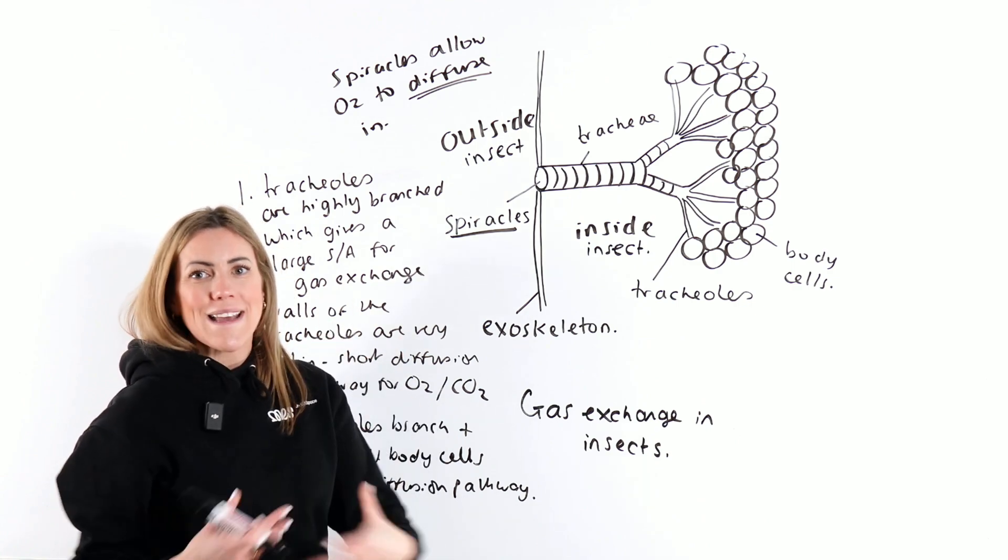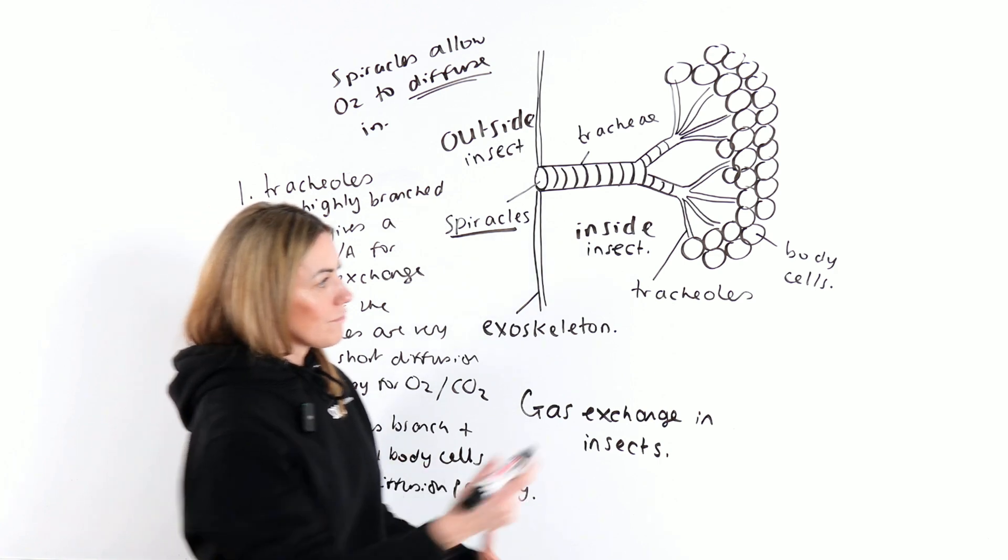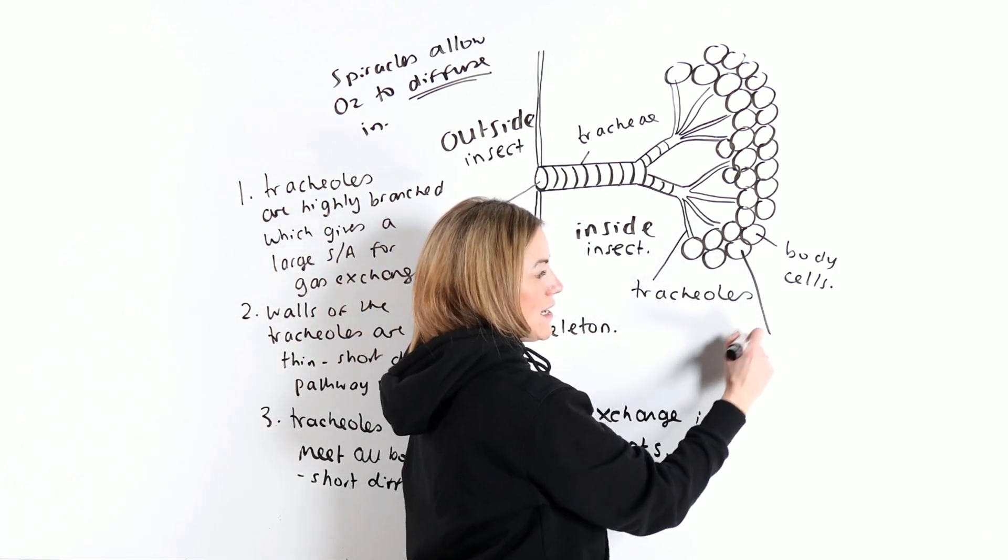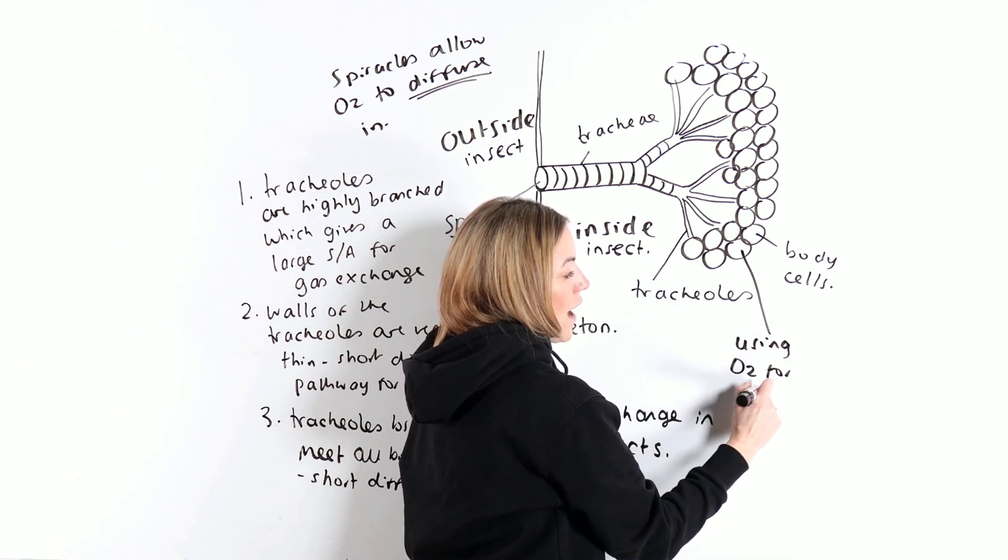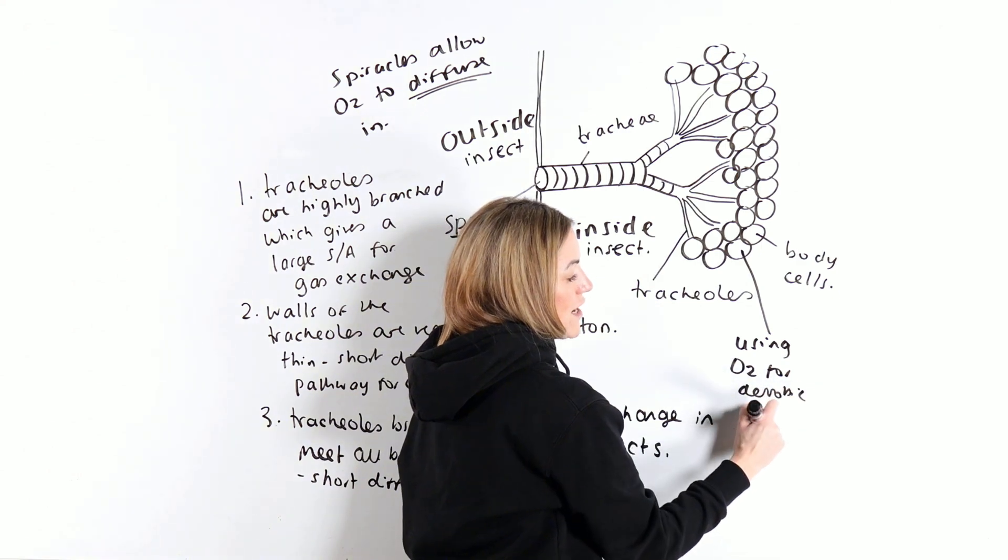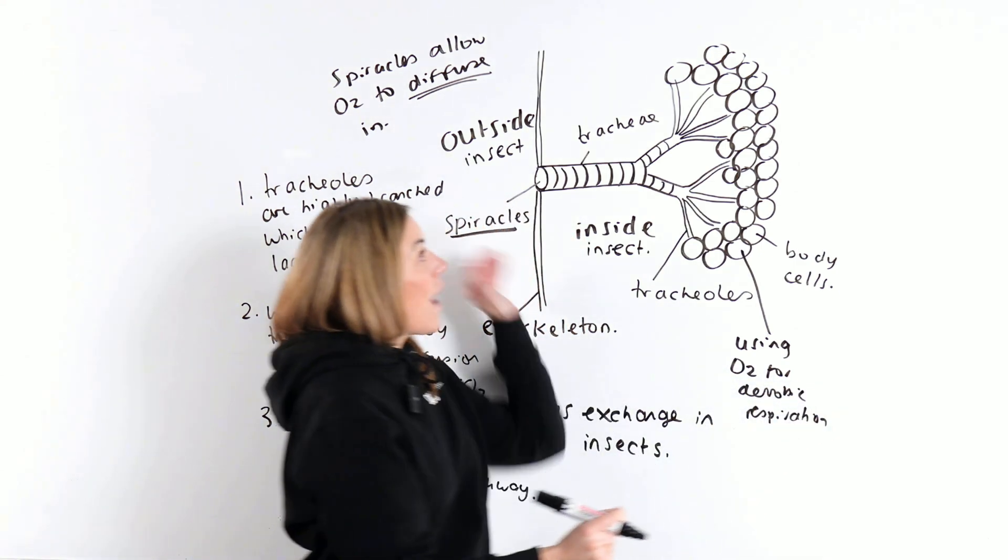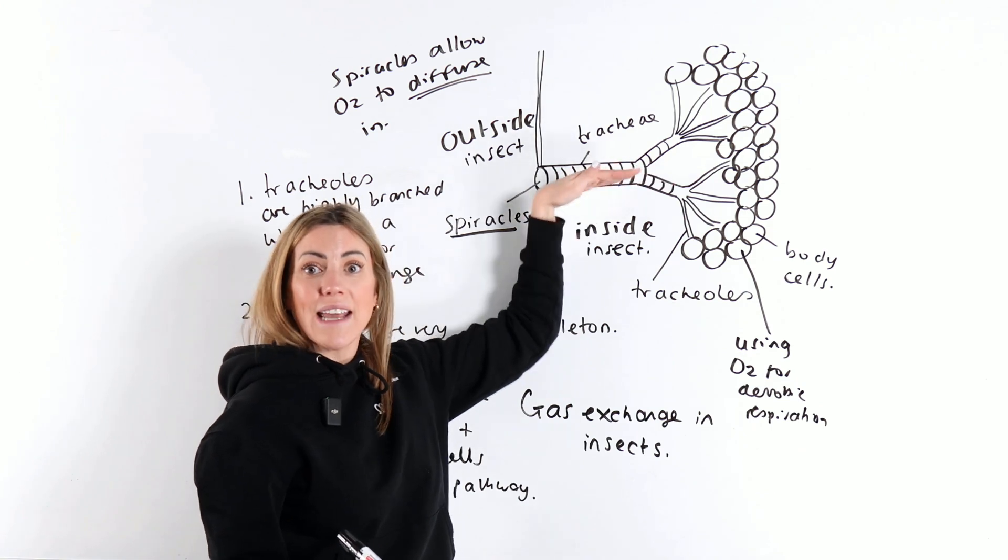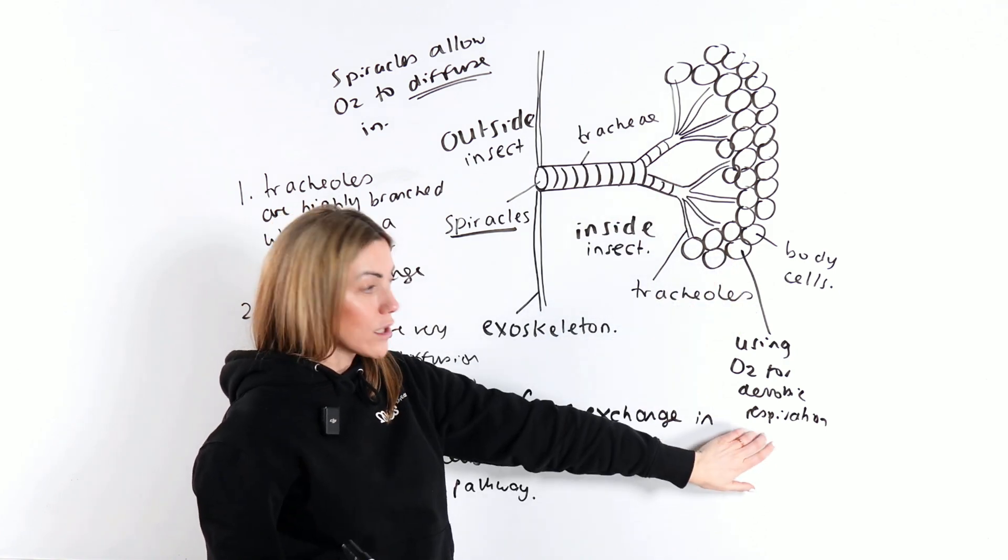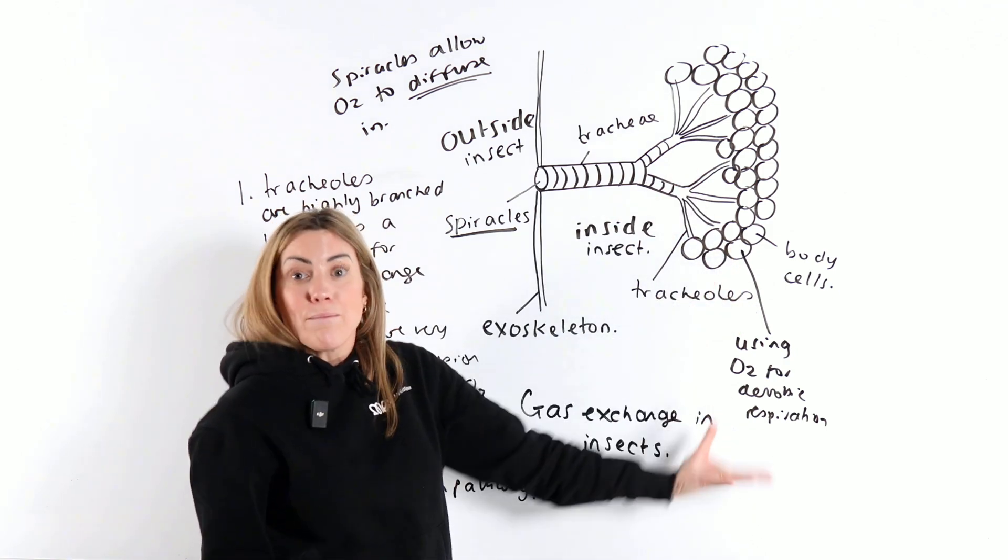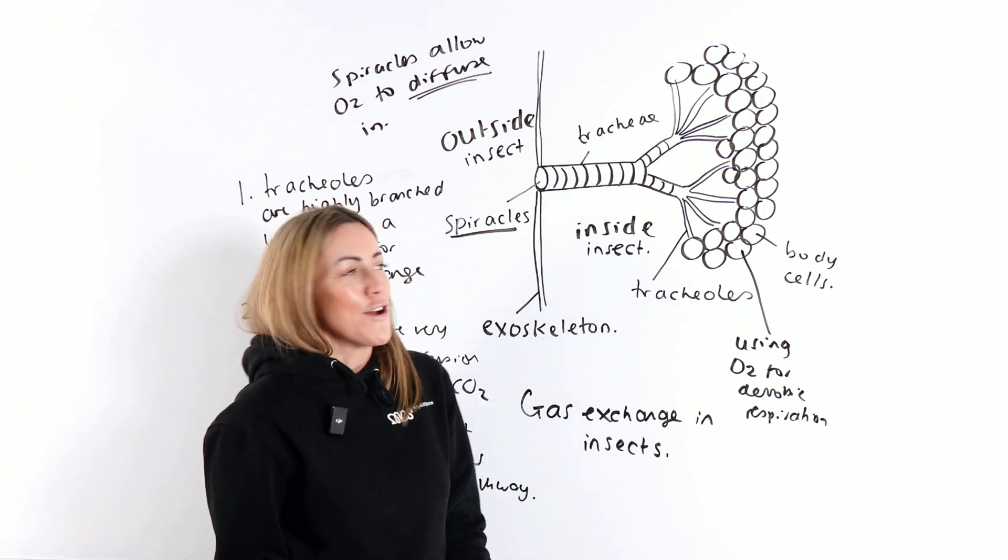Why does it diffuse? What is the mechanism? Well, these cells are using oxygen for aerobic respiration. So you've got air coming in with a higher concentration of oxygen. The cells have a lower concentration of oxygen simply because they are using it for aerobic respiration.